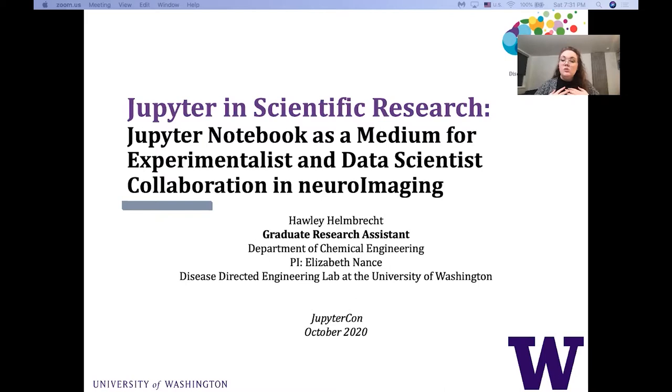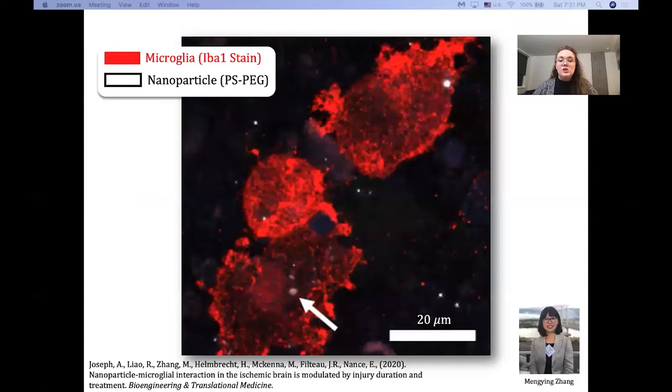My talk is about how we use Jupyter notebook as a medium for experimentalist and data scientist collaboration in neuroimaging. Since our lab takes such cool images of the brain, I thought we'd dive straight into a picture from our most recent publication in Bioengineering and Translational Medicine of microglia, the immune cells of the brain interacting with nanoparticles.